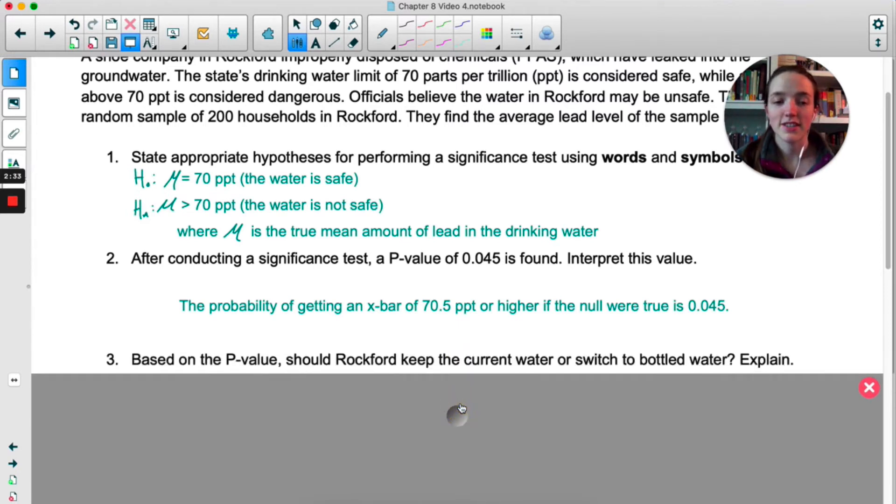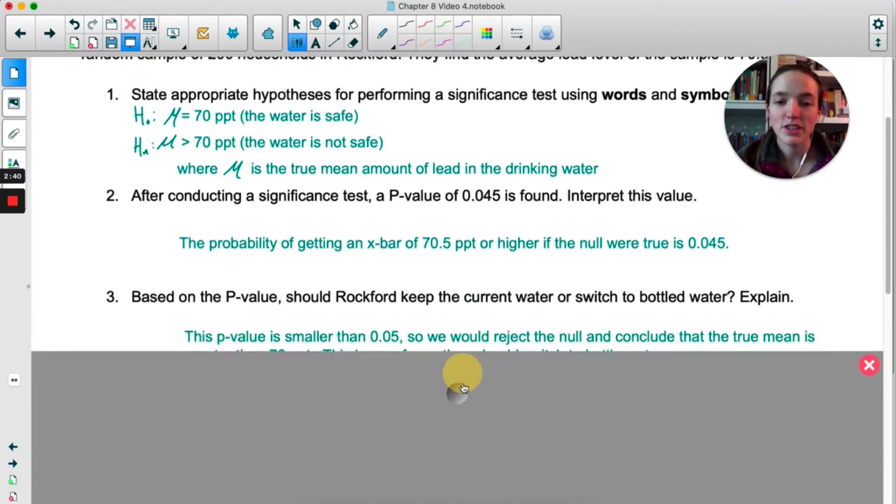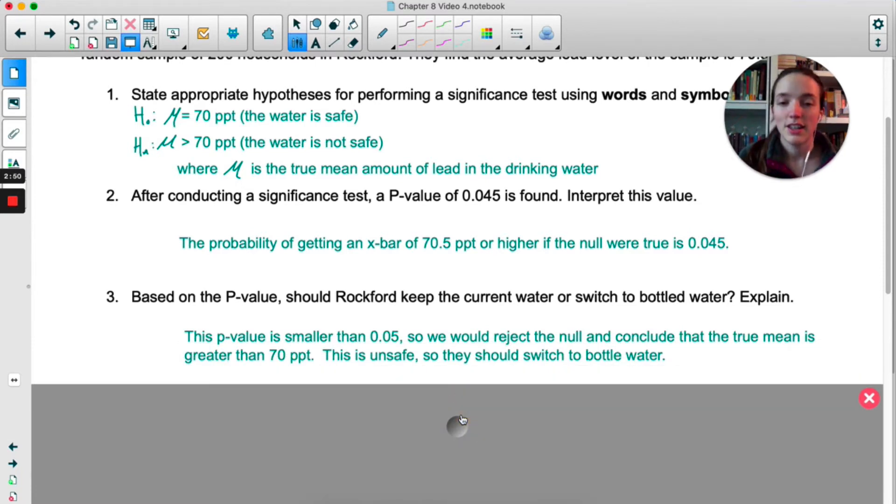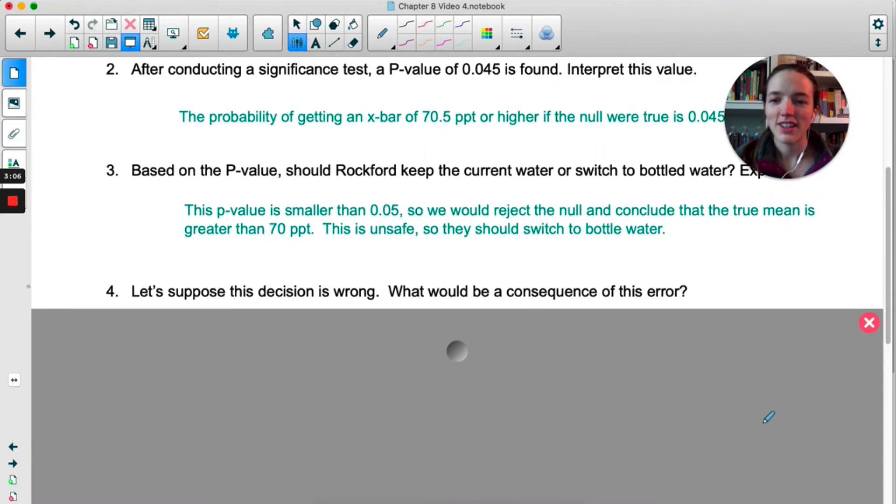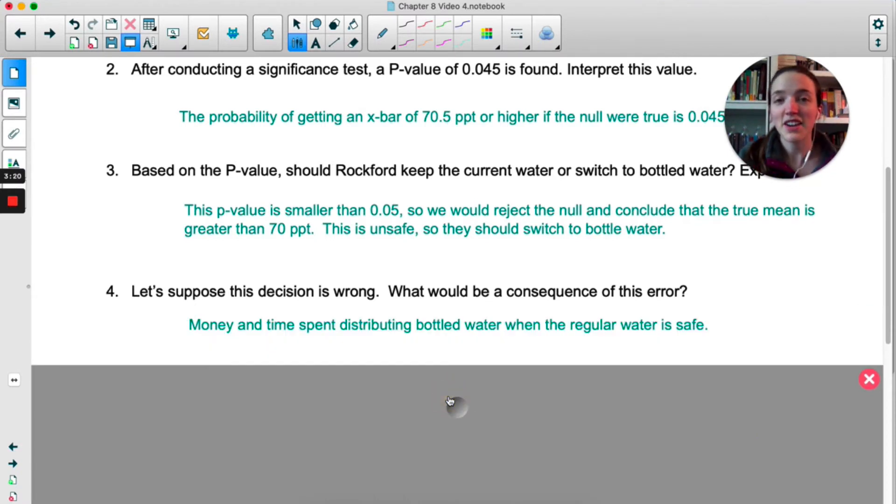In number three we're asked about our conclusion. Based on that p-value should they keep the current water or switch? Well that p-value is smaller than 0.05 so we would reject the null. If you look above you can see that if we reject the null we're concluding that the mean amount of lead is greater than 70, which means we're concluding the water is not safe. So they should probably start drinking bottled water. Now number four, if you made that decision and it turns out it was wrong, what would be the consequences? So you convince everyone in this town the water is not safe when in reality it's fine. The consequences: that's a lot of money spent on water bottles and a lot of time spent distributing water bottles. Also not good for the environment.